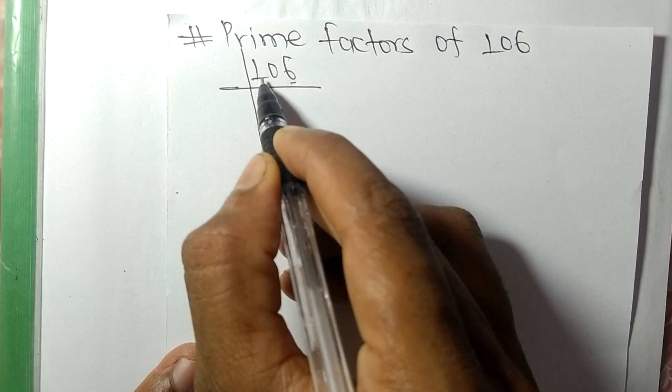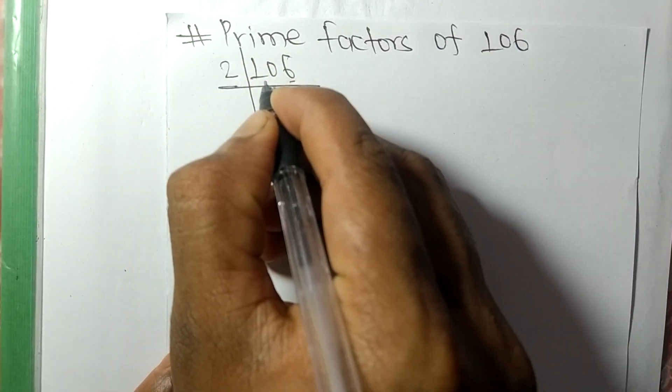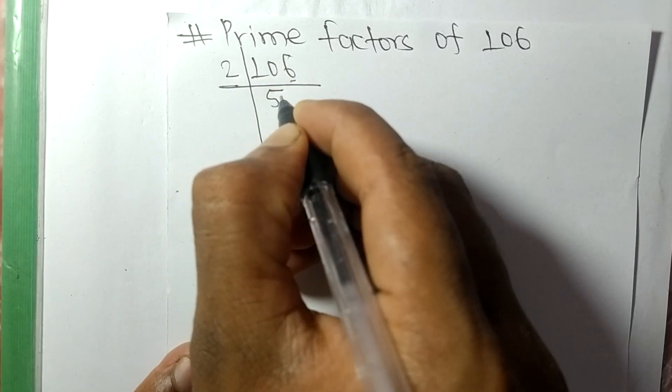So 106 divided by 2, we get 5 and 6 on dividing with 2 we get 3.